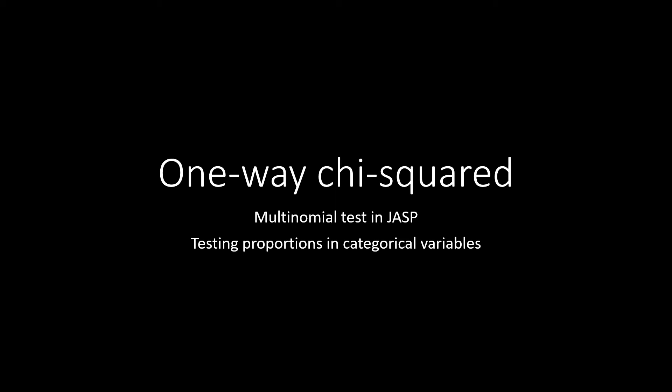Hello, and welcome to ShipViewStats. In this video, we're going to go over the one-way chi-squared test in JASP. A one-way chi-squared test is also known as a multinomial test, and it will allow us to test the proportions of individuals in different categories on a nominal or ordinal variable.